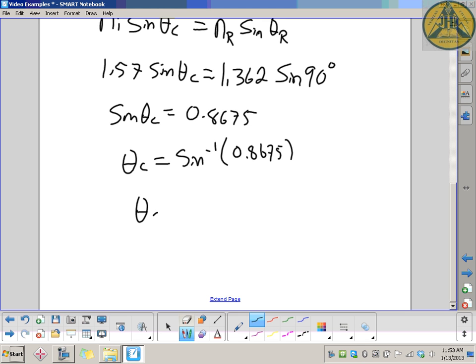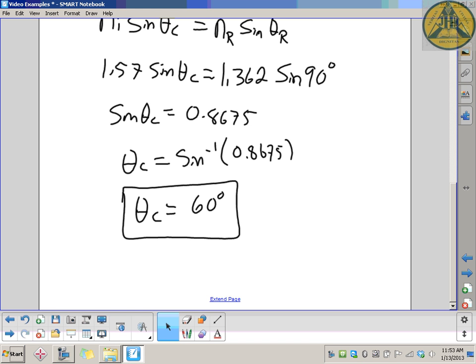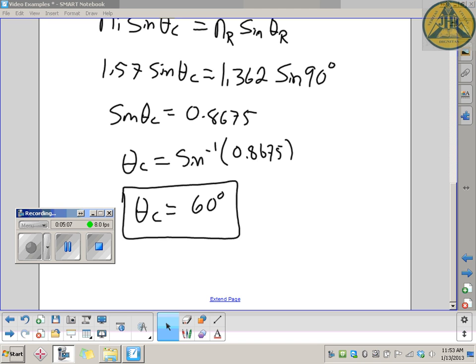Multi-step problem, good exam kind of question to make sure you can start with the basics of distance and time to get velocity, realize that velocity gives you an index of refraction, use that in conjunction with Snell's law and what critical angle means to get what the critical angle is. In this case, 60 degrees.